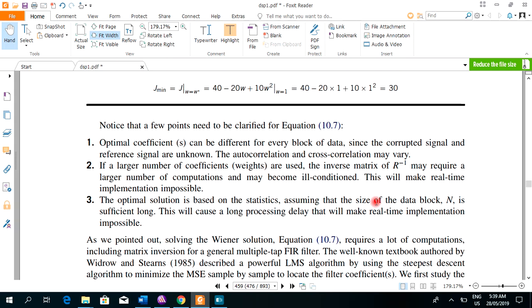There are few points that we have to remember. Optimal coefficients can be different for every block of data. Since the corrupted signal and the reference signal are unknown, the autocorrelation and cross-correlation may vary. The second thing that we should remember or need to be clarified is that if a large number of coefficients are used, the inverse matrix of autocorrelation may require a large number of computations and may become ill-conditioned. This will make real-time implementation impossible.